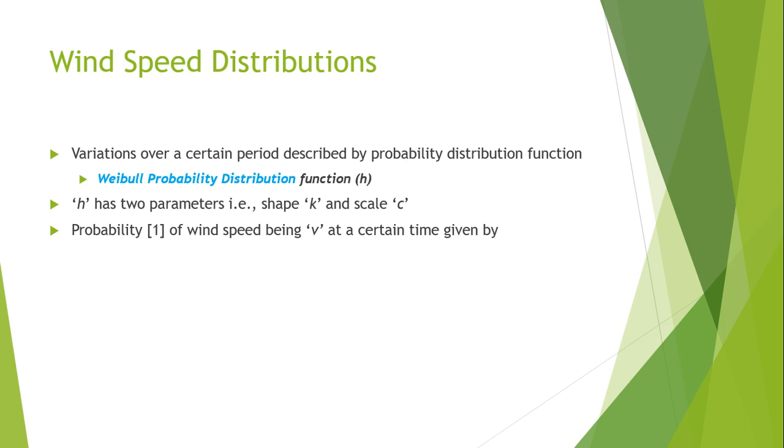The probability of wind speed v at a certain time instant is given by the Weibull probability distribution function: h(v) equals k/c times (v/c)^(k-1) multiplied by the exponential e^(-(v/c)^k) for the limits 0 to infinity.